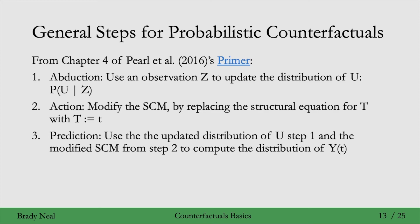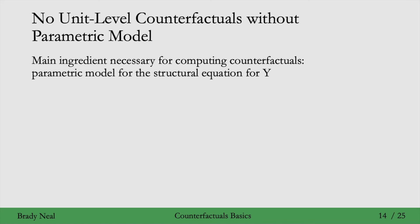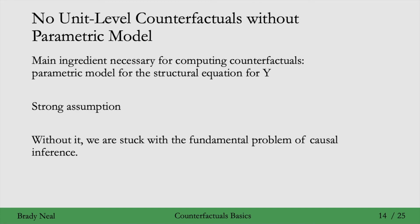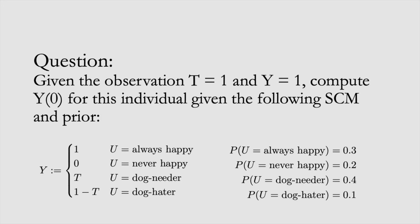We've now seen how we can get around the fundamental problem of causal inference and actually infer counterfactuals. But in order to do this, we needed a parametric model for the structural equation for y. Without it, we wouldn't be able to compute these unit-level counterfactuals. Having such a parametric model is a pretty strong assumption. But without making this strong assumption, we're stuck with the fundamental problem of causal inference — we can't observe both unit-level potential outcomes, or in the non-binary treatment case, more than one unit-level potential outcome. We'll see that we don't need this strong assumption if we care about the population level rather than the unit level. The second question: given observation t equals 1 and y equals 0, compute the counterfactual y_0 given the following SCM and prior.